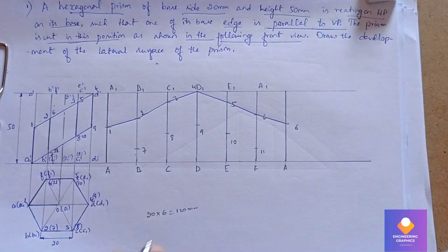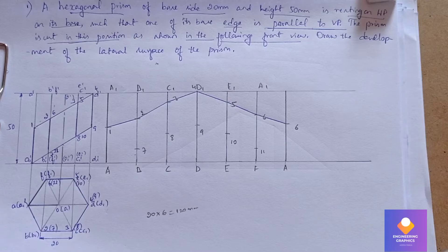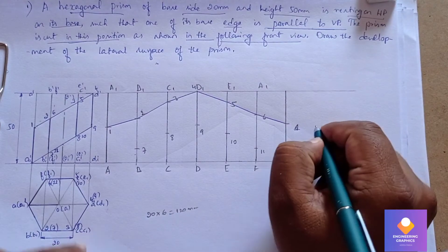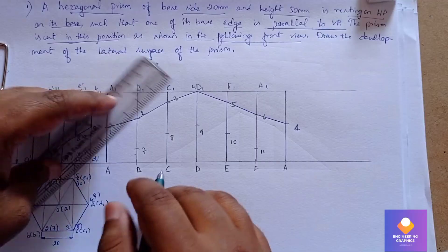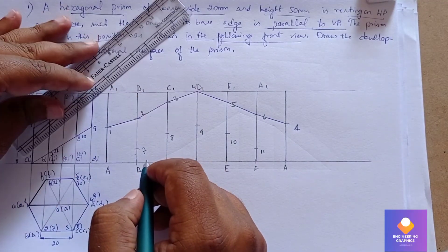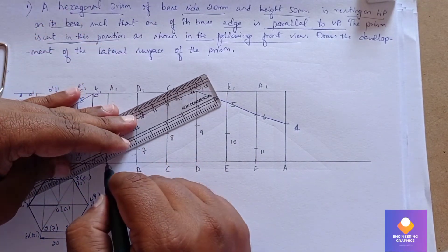That is after 6, that is 1 - you can correct that. So now we have to join it from A here. A to 7, then 7 to 8, like that we need to join.